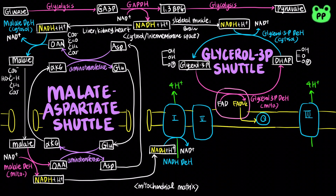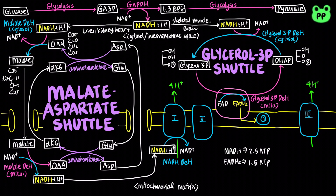In the mitochondrial matrix, NADH is equivalent to 2.5 ATP, while FADH2 is only equivalent to 1.5 ATP. Each glucose molecule generates 2 NADH through glycolysis.